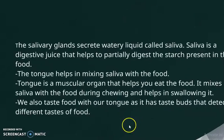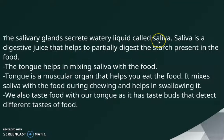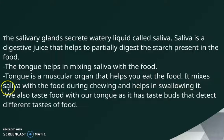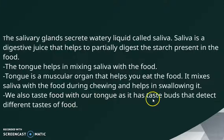Salivary glands are present in the mouth — there are three pairs of salivary glands, and they secrete saliva which helps in digestion. The tongue is a muscular organ that helps move the food, mixes saliva with the food, and helps in swallowing. We can also taste food with the help of taste buds present on the tongue, which detect bitter, salty, and sweet tastes.